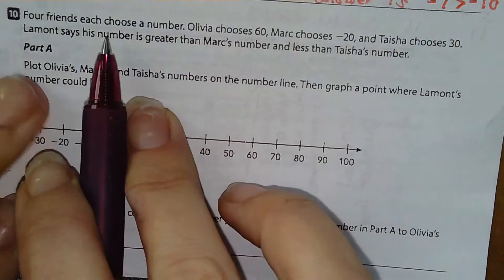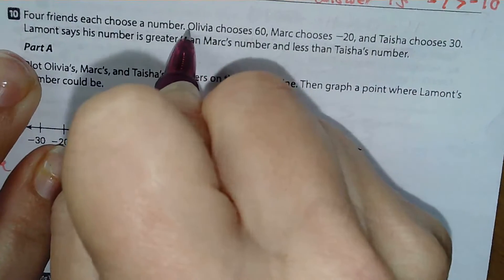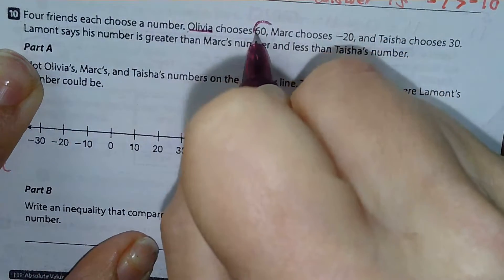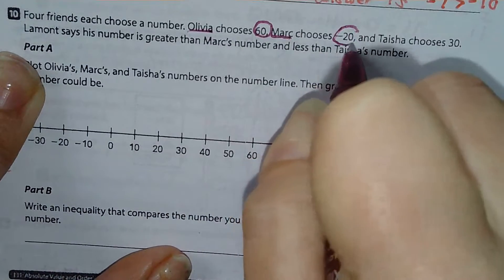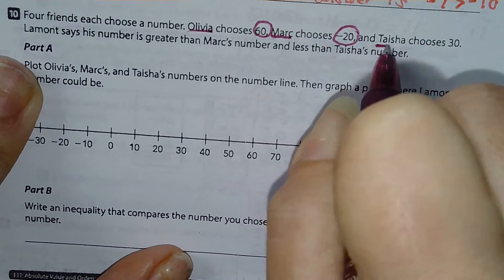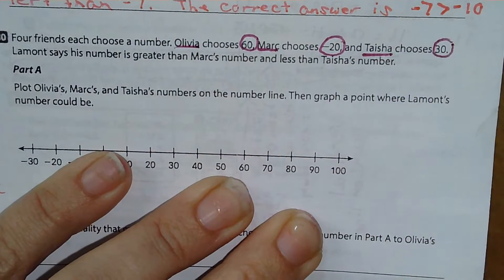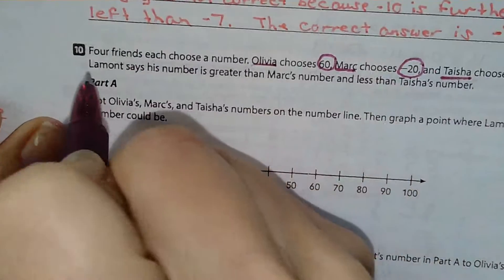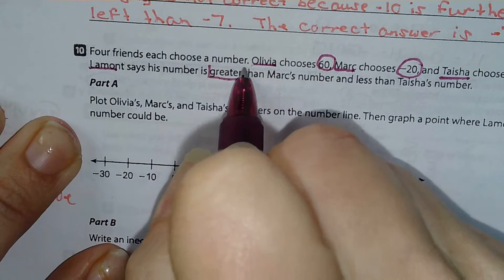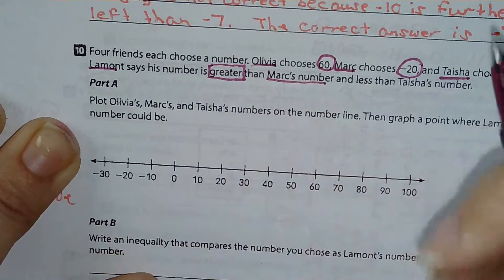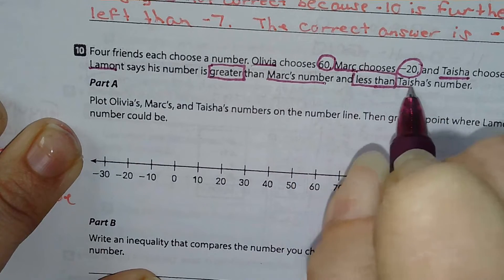Okay, four friends each choose a number. Olivia chooses 60, Mark chooses negative 20, and Tasha chooses 30. Lamont says his number is greater than Mark's number but less than Tasha's number.